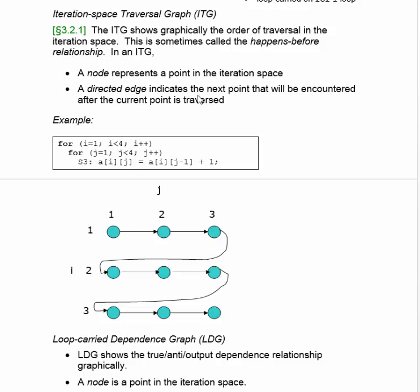A directed edge indicates the next point that will be encountered after the current point is traversed. For statement S3 — A sub i j equals A sub i j-minus-1 plus 1 — what matters for the ITG is the for statements. i goes from 1 to 4, and while i is going from 1 to 4, j goes from 1 to 4 for each value of i. So we start with i=1, j=1, then i=1, j=2, then i=1, j=3, then i=2, j=1, and so on.